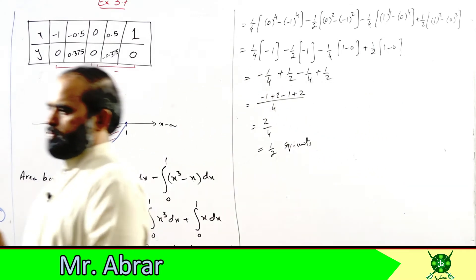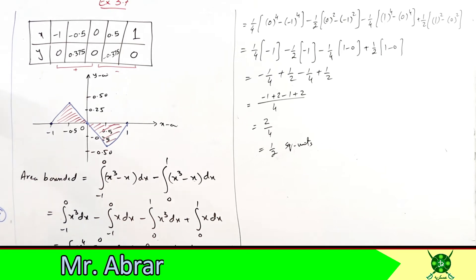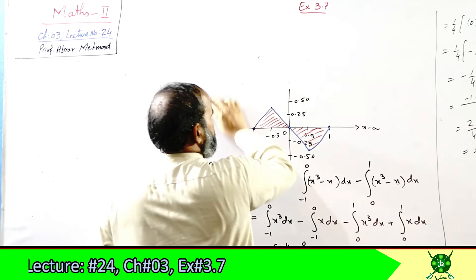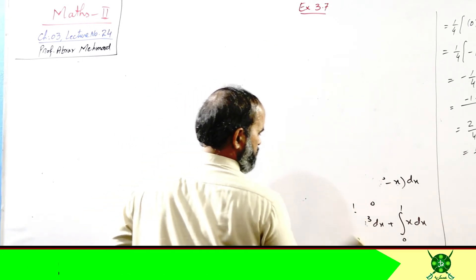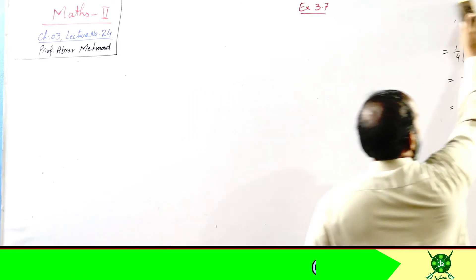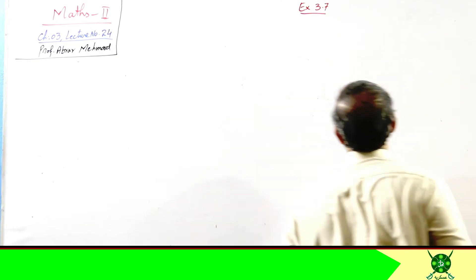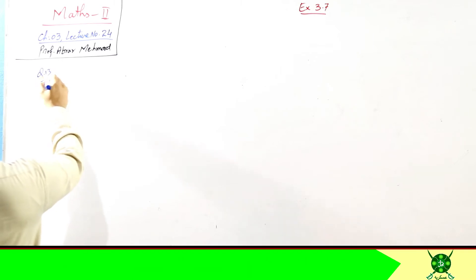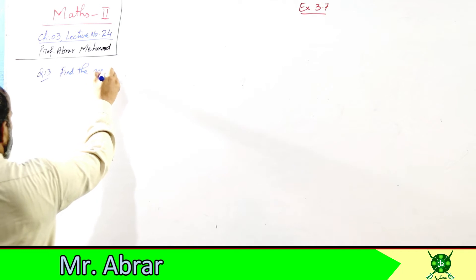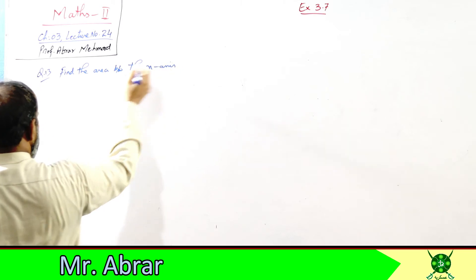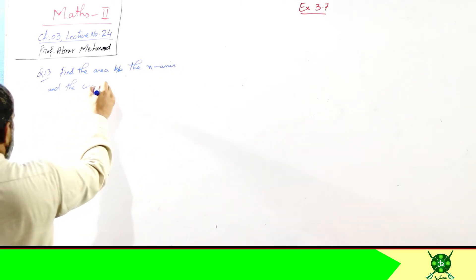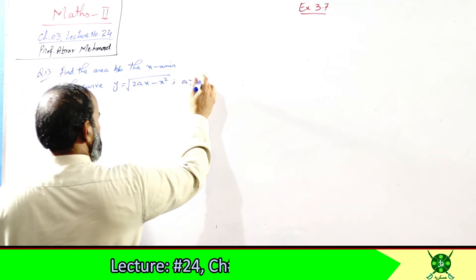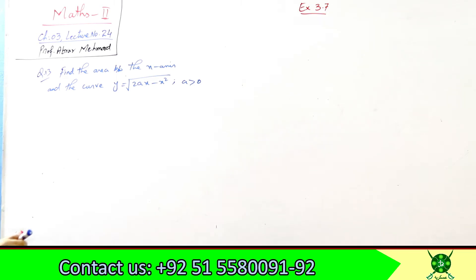Good, so the answer is 1/2 square units. Now I will do one more question from this set — the longest one, question 13. It reads: Find the area between the x-axis and the curve y = √(2ax − x²), where a > 0 (a is positive).